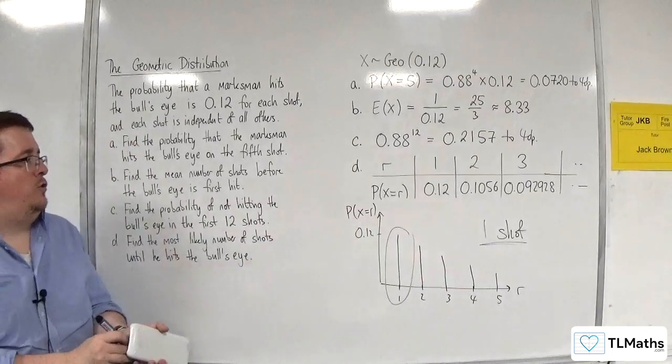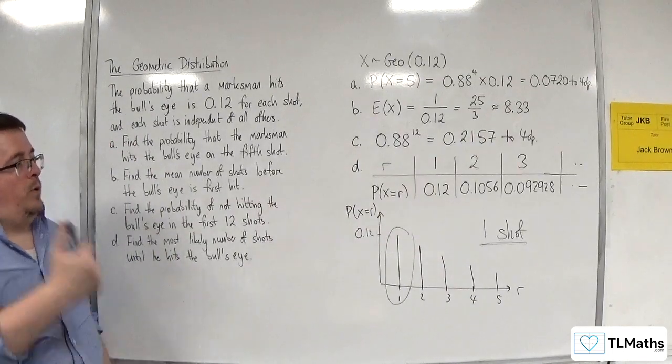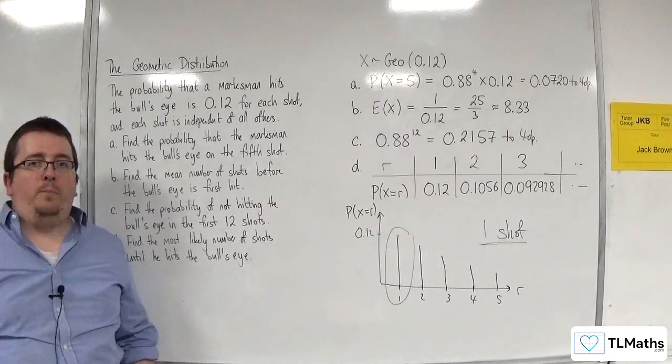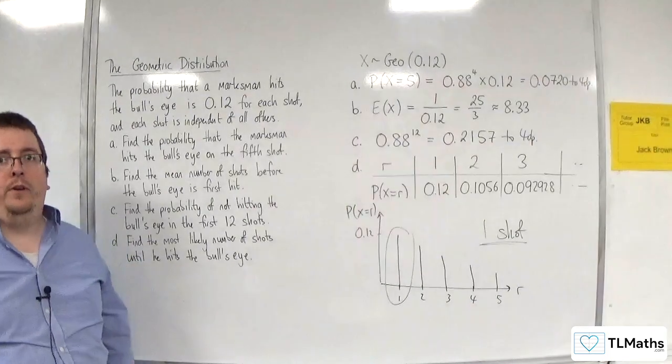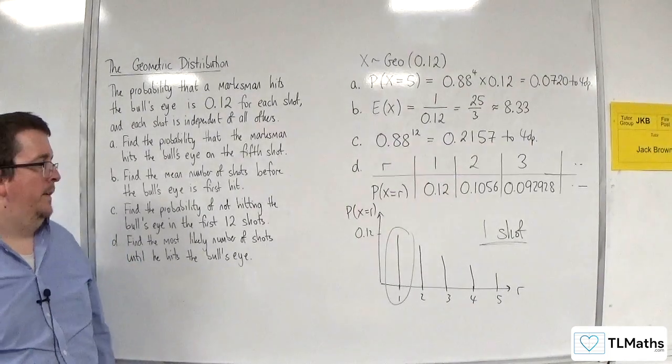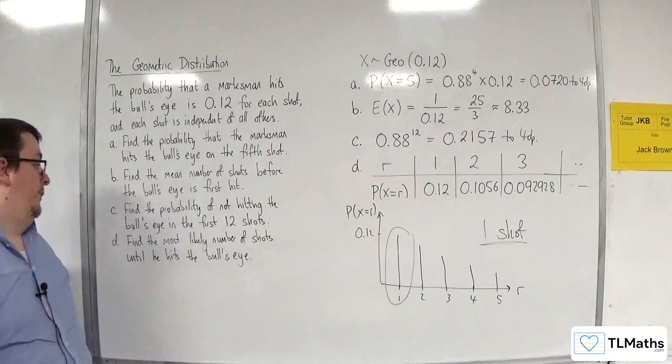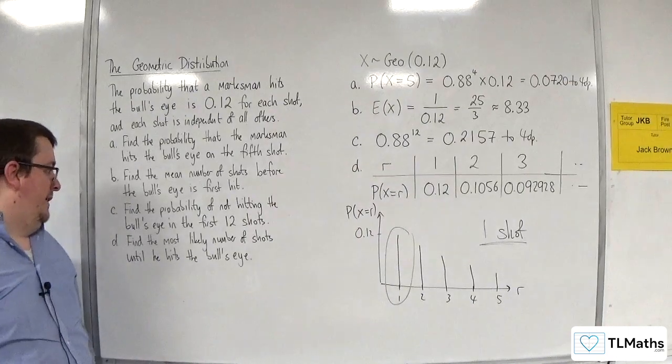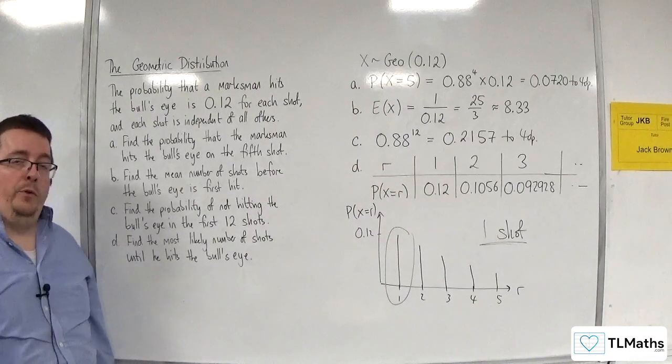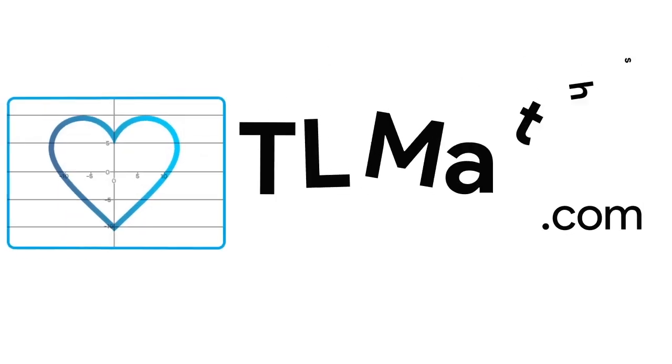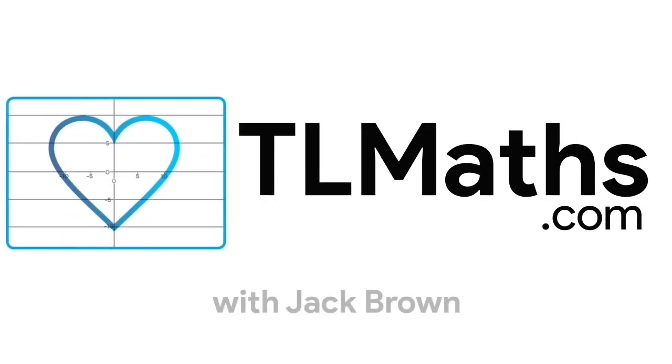So, with a geometric distribution, probability of X being equal to 1 will always be the largest of all the probabilities. And so, one shot is the most likely number of shots he needs until he hits the bullseye.